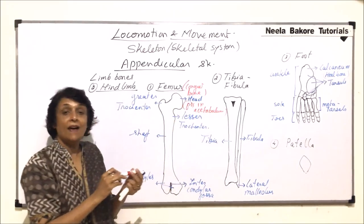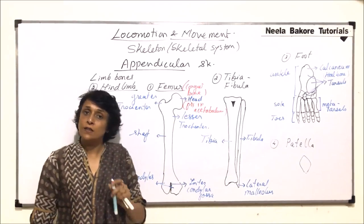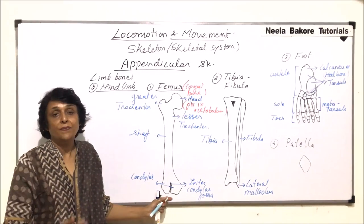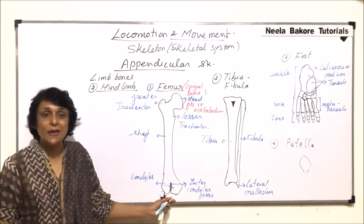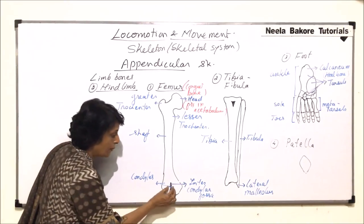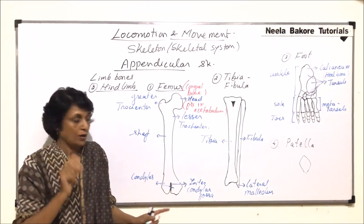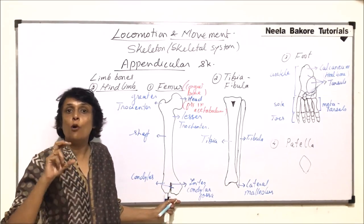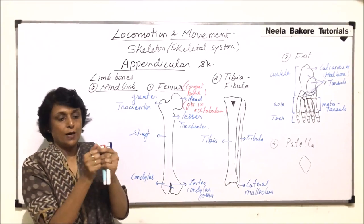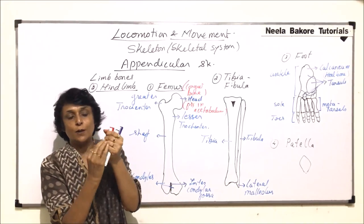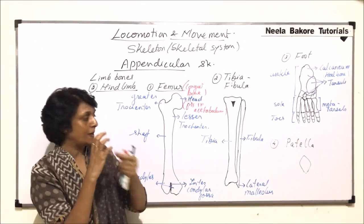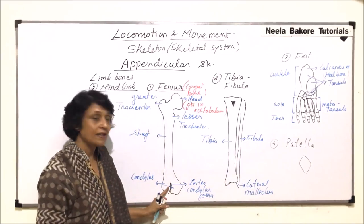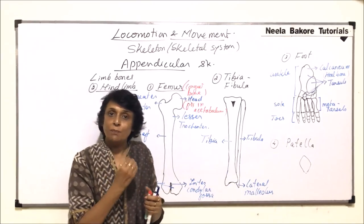The acetabulum is the cavity or depression in the hip girdle or pelvic girdle. The shaft is a long strong bone. At the other end of the femur there are condyles, and in between the condyles there is a depression known as the intercondylar fossa, where the kneecap or patella fits in. There are two condyles — two bulges — and in between there is a depression where the patella fits. Patella is a small flat bone, and this fossa is for patella fixation.